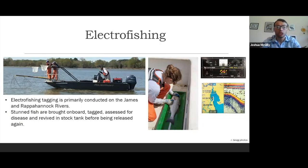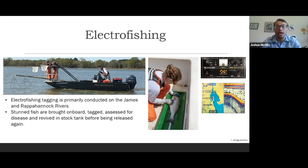Electrofishing is a bit different. Electrofishing tagging is primarily conducted in the James and Rappahannock rivers, but there is supplemental surveying done on other Chesapeake tributaries including the Mattaponi. Stunned fish are brought on board, tagged, assessed for disease, revived in a stock tank, and then released back into the river. Behind the captain, a generator creates the electricity used for electrofishing. At the bow of the boat, two surveyors holding nets collect the stunned fish, and poles held out in front introduce the electricity into the water. The electricity stuns the fish, they are netted by the crew, brought onto the boat, and once back to a normal state, reintroduced into the river with a newly acquired tag.